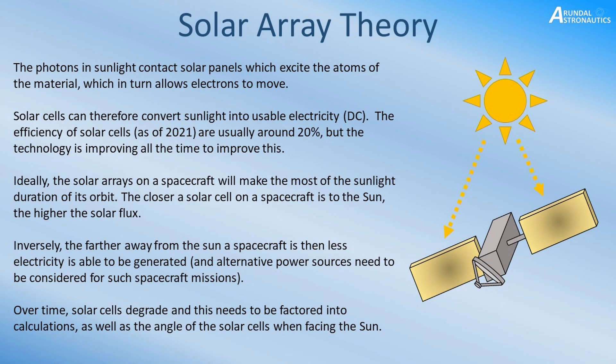Ideally, solar arrays on a spacecraft want to make the most of the sunlight duration whilst in orbit. The amount of solar flux a solar cell can receive is dependent on the distance between the spacecraft solar panels and the sun. So if you're somewhere like Venus or Mercury the solar flux will be significantly higher than at Mars or beyond, and the further away you get from the sun it reaches a point where the solar flux is so low that spacecraft designers have to consider alternative means for powering their spacecraft.